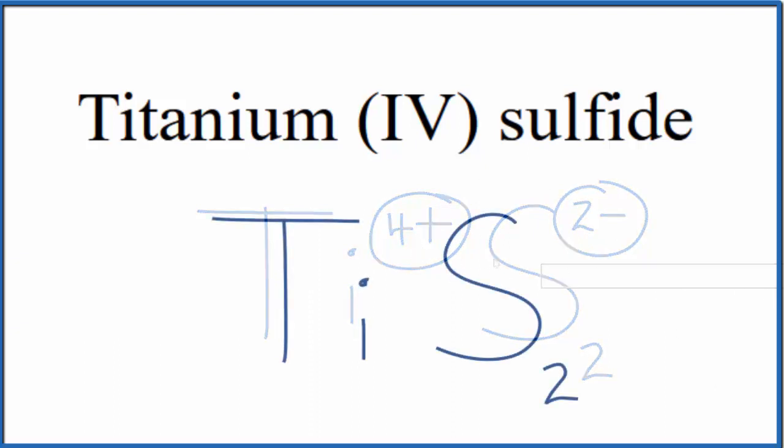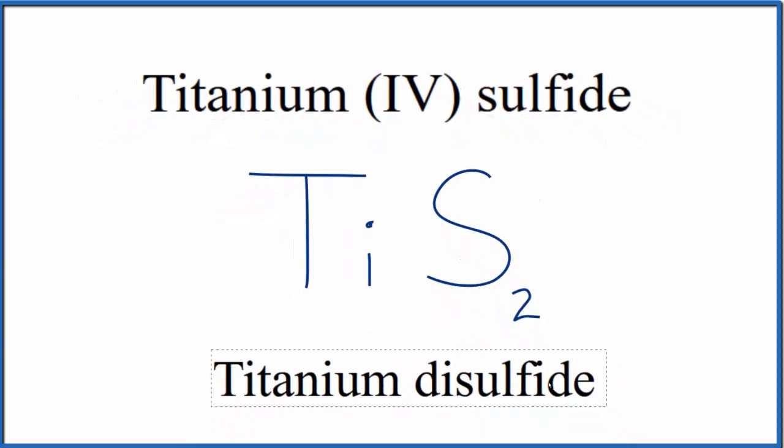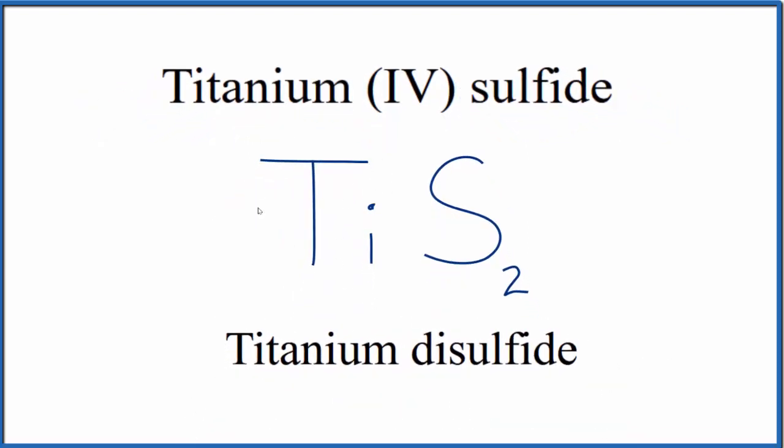So this is the formula for titanium four sulfide. Note that sometimes this is given the name titanium disulfide, where we have our titanium and the di means we have two sulfur atoms. So you may see either one of these names, but the formula will be TiS2.